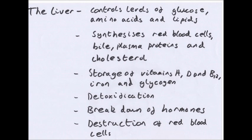The liver controls levels of glucose, amino acids, and lipids. It synthesises red blood cells, bile, plasma proteins, and cholesterol. It is involved in storage of vitamins A, D, B12, iron, and glycogen. It also helps in detoxification, the breaking down of hormones, and destruction of red blood cells.